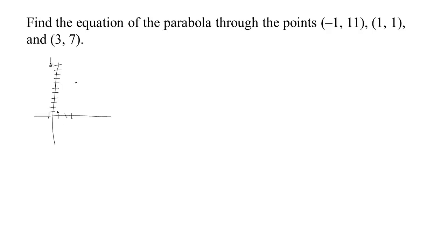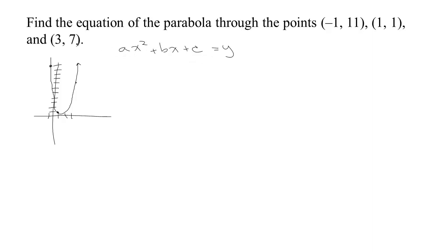What we're trying to do is find the equation of the parabola that would fit through these three data points. The equation of a parabola usually has an x-squared term, an x term, and a constant, giving us the output value y. To figure out the equation of a particular parabola, you have to find three things: a, b, and c. We're going to use these three points in order to find those three unknowns.